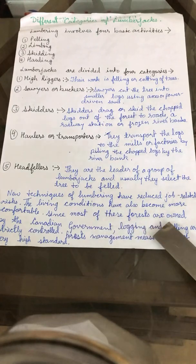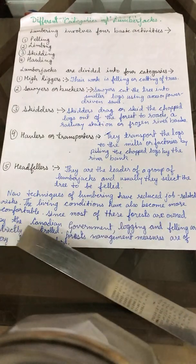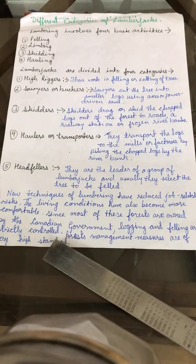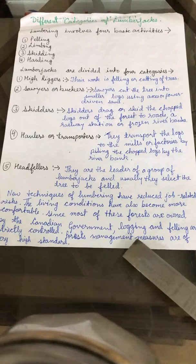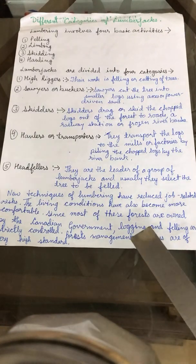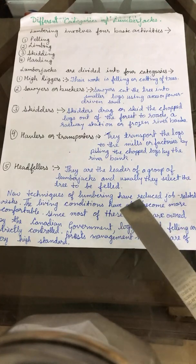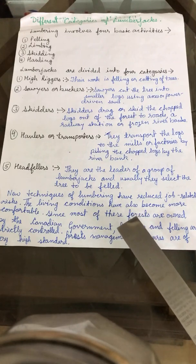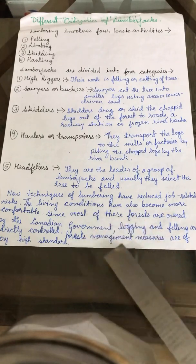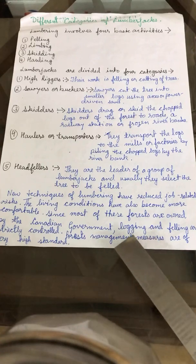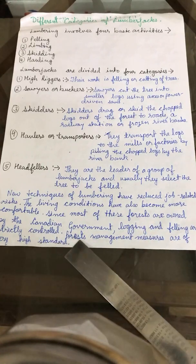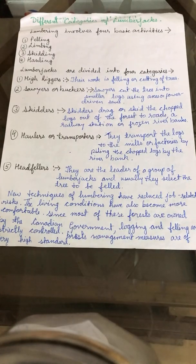Since most of these forests are owned by the Canadian government, logging and felling are strictly controlled. Forest management measures — such as replanting, preservation of young trees, and protection against diseases and insects — come under forest management measures, and all these are of very high standard.